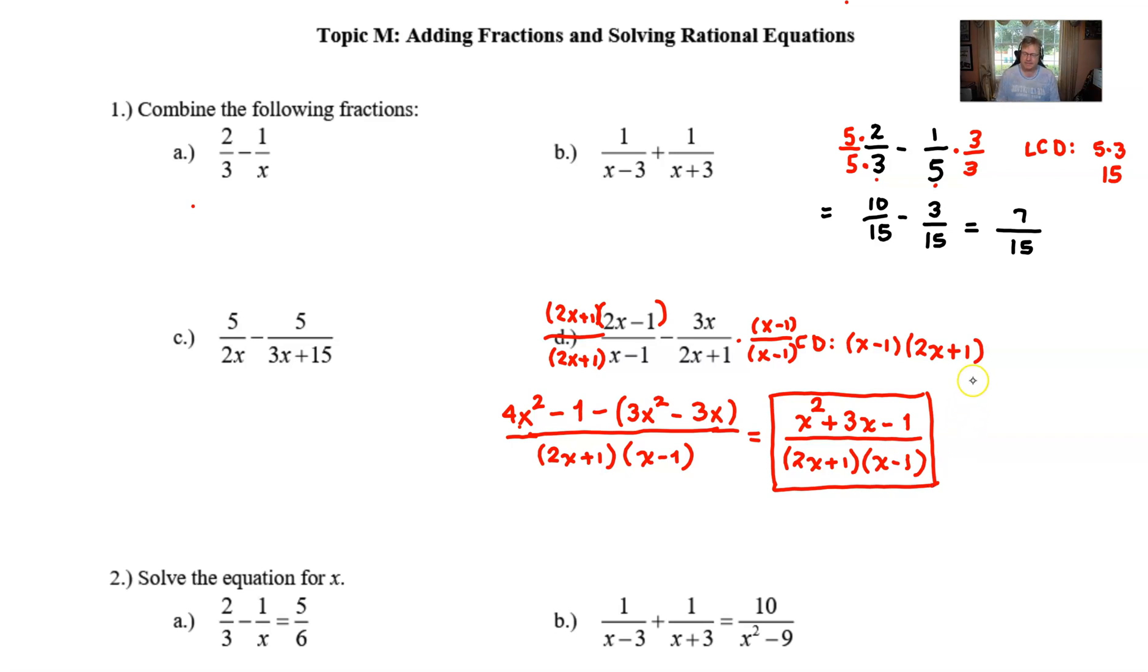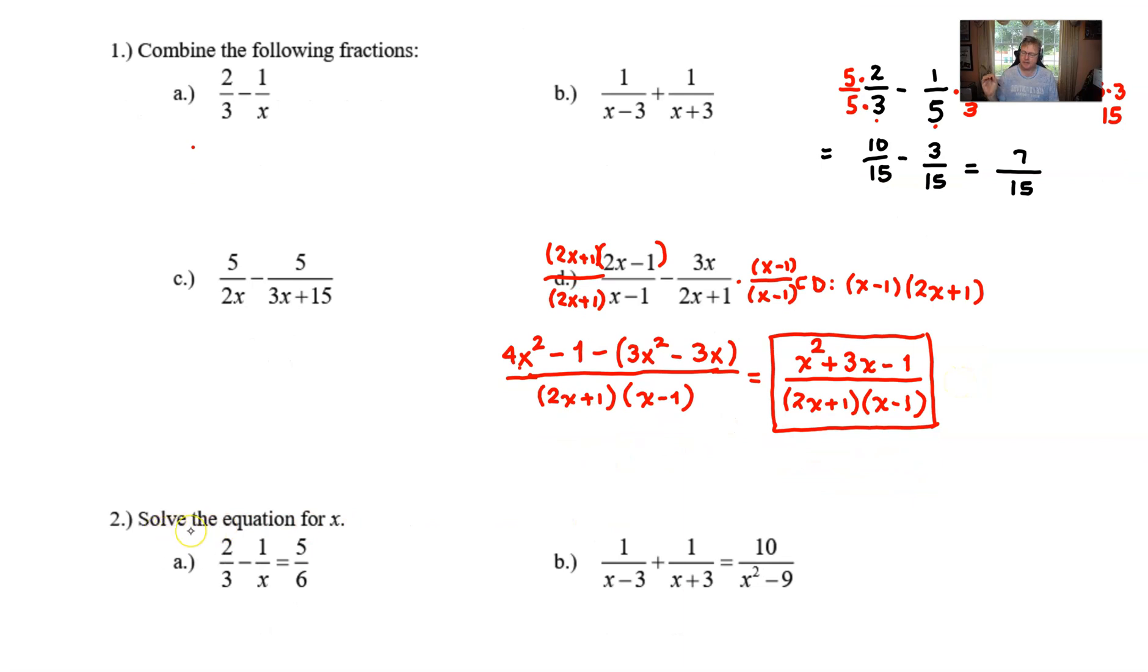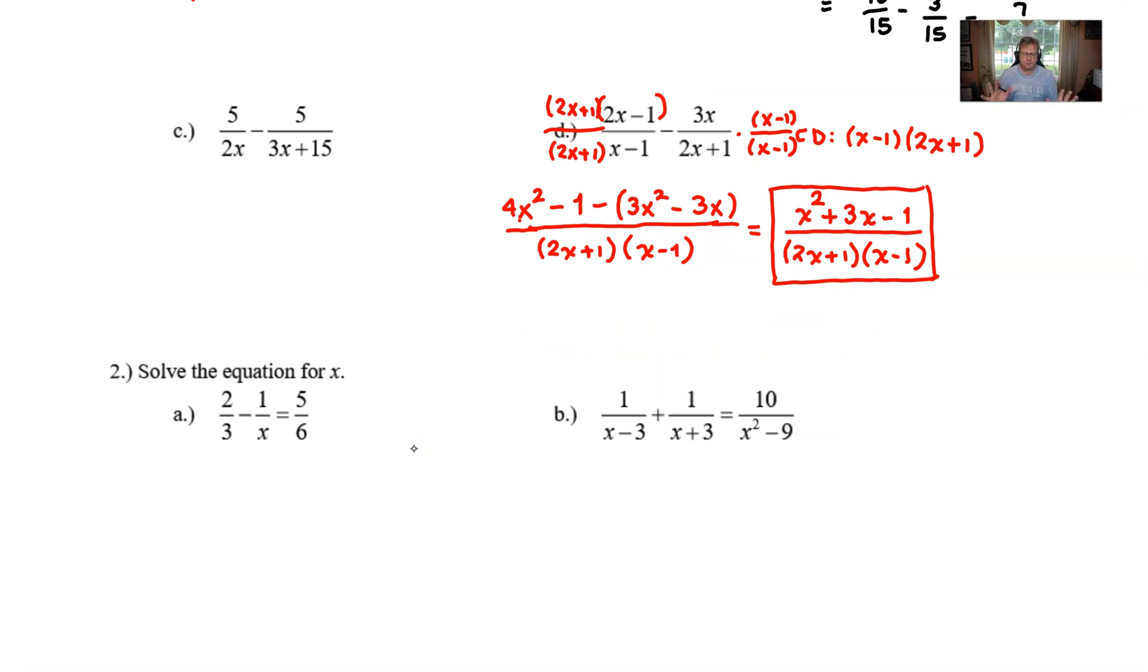Let's take a look at part d. Part d is a little different because the directions say to solve the equation for x. So in this particular case, you can do the problem the same way, but I have a unique way that kind of cleans things up a little bit. It still involves getting the common denominator. Now before we start doing that, I would look through your problem and make sure that every single denominator that you see is completely factored. In the case of x squared minus 9, we can break that apart into x minus 3 times x plus 3. It's the difference of squares. That's going to be very helpful.